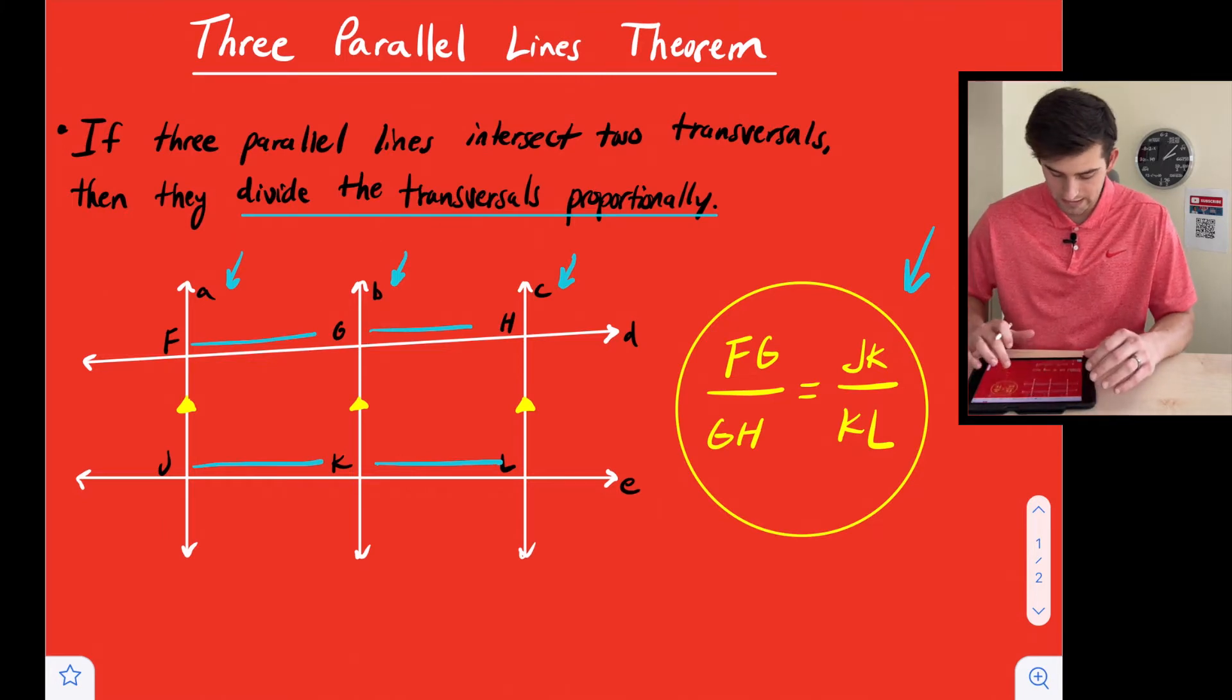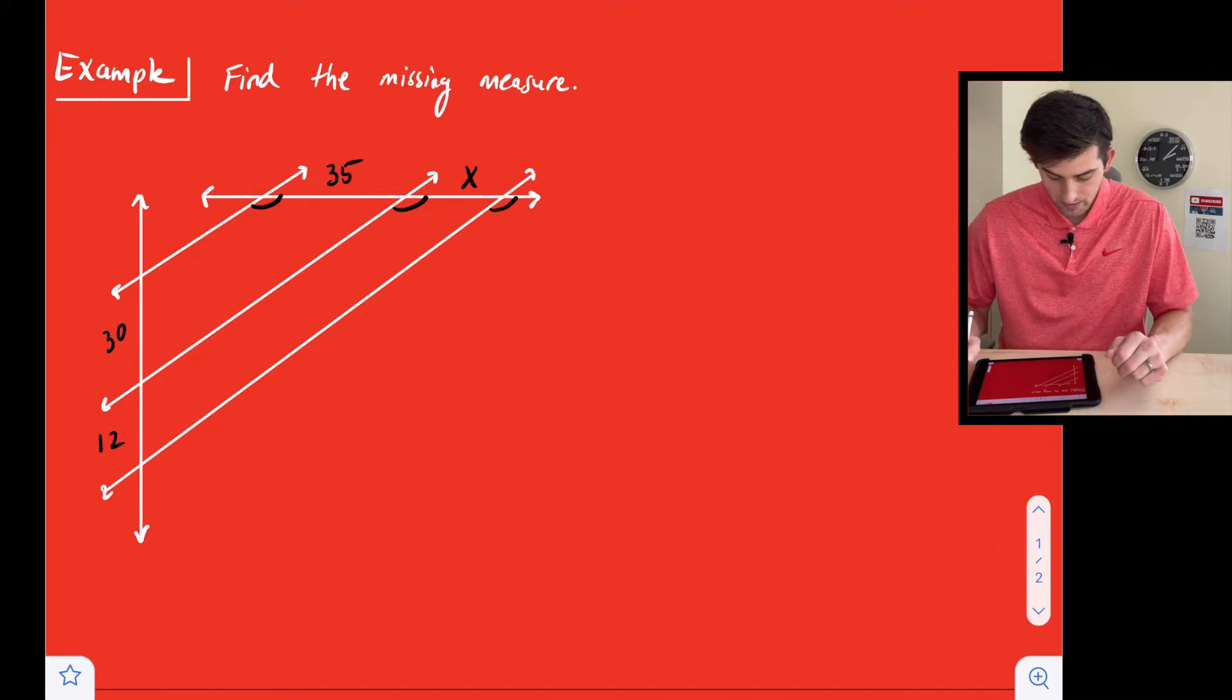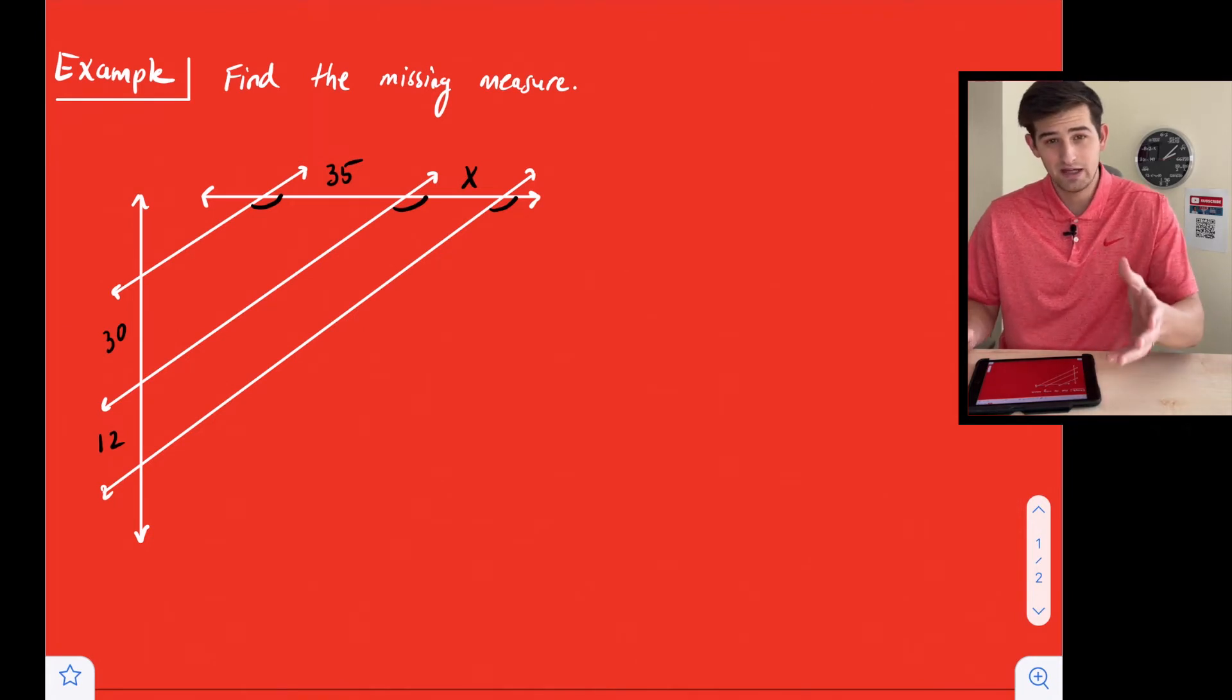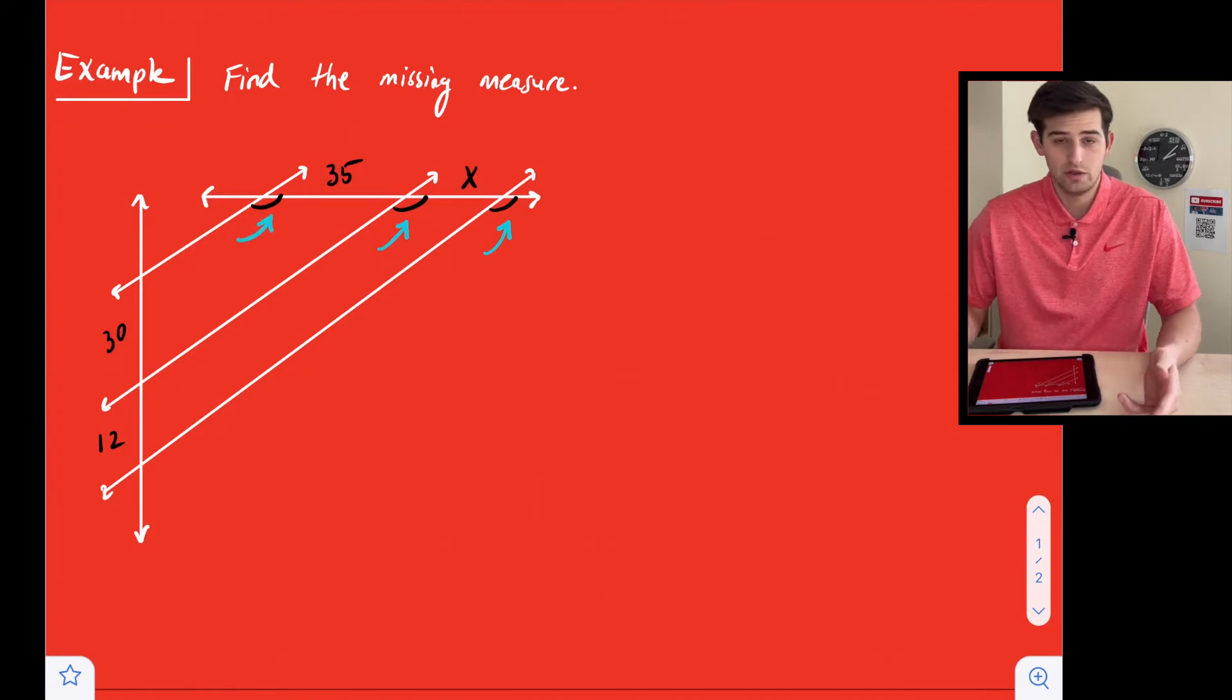Okay, so let's take a look at an example. Find the missing measure. So we have parallel lines right here. Notice we don't have the arrows like this, so we don't know that they're parallel because of that diagram. But what we do see is that these corresponding angles are congruent. They're corresponding because they're located in the same position. We know they're congruent because that's what that arc represents.